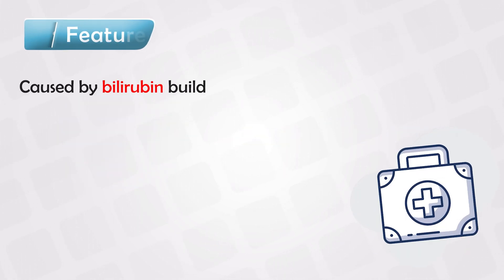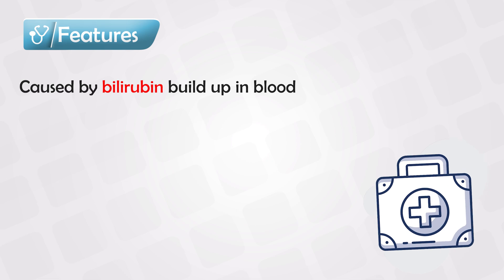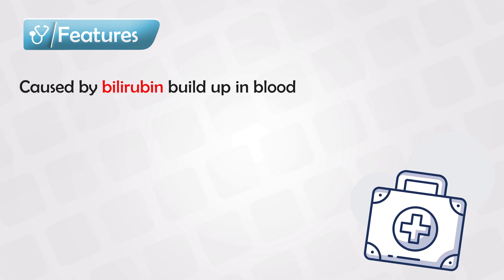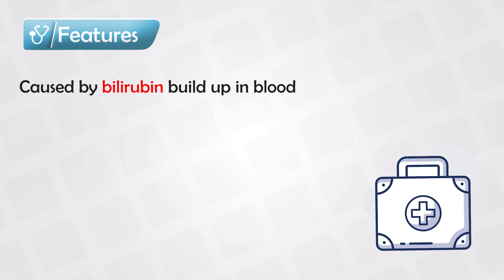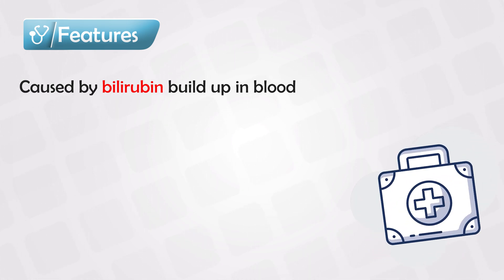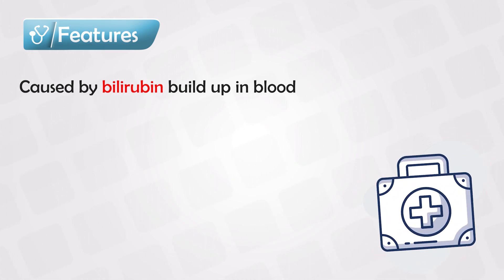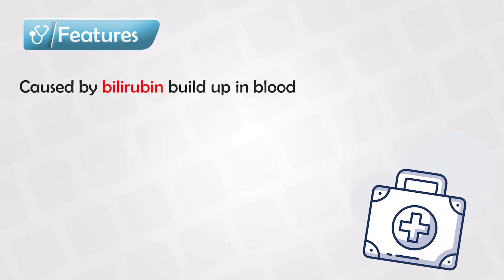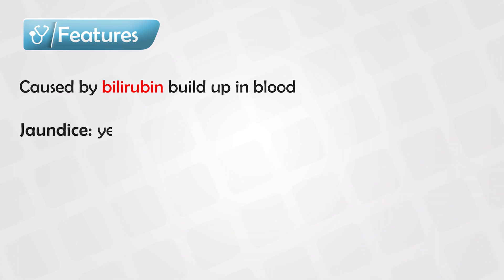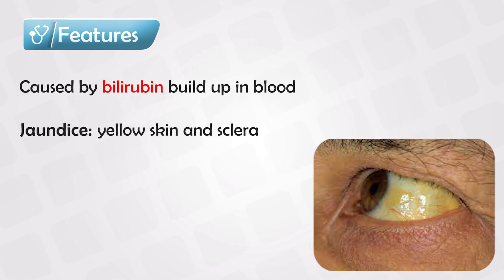Jaundice is caused by a buildup of bilirubin in the blood. This bilirubin can be deposited everywhere, and it looks yellowish in color. So the patient presents with yellowish discoloration, and this can be seen in both the skin and the eyes.